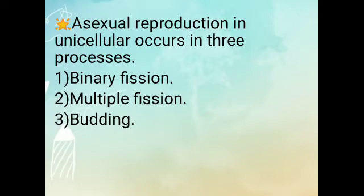Asexual reproduction in unicellular organisms occurs in three processes. First: Binary Fission. Second: Multiple Fission. And third: Budding.